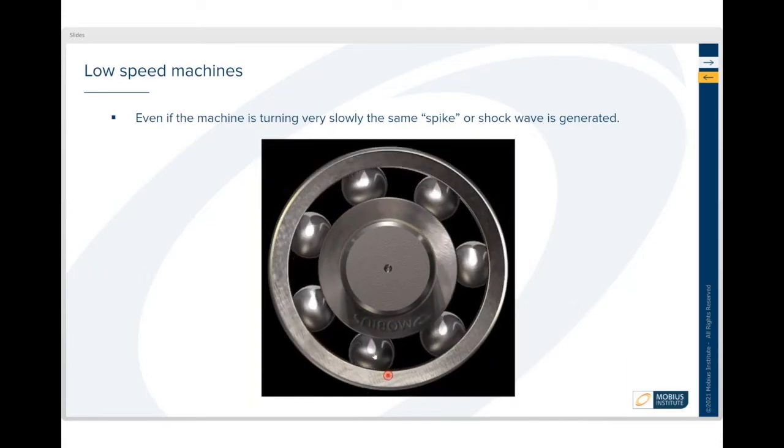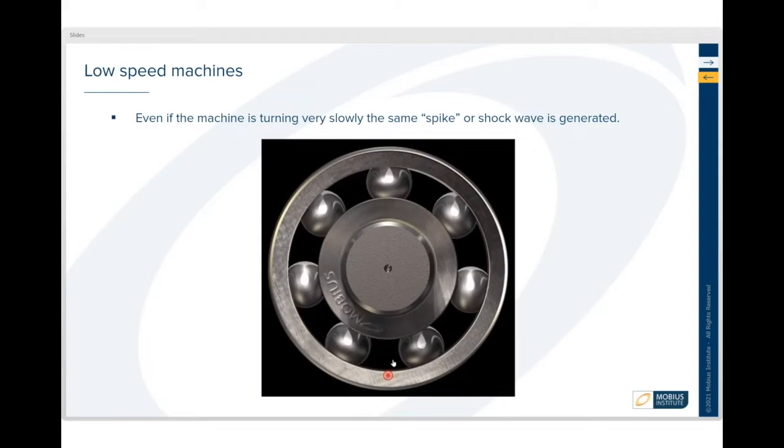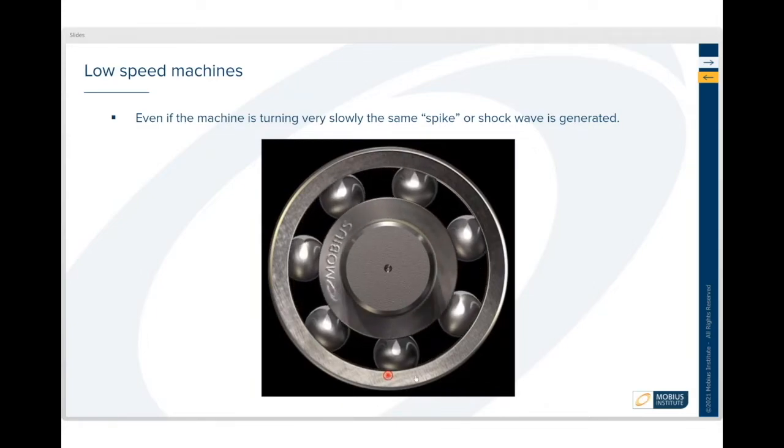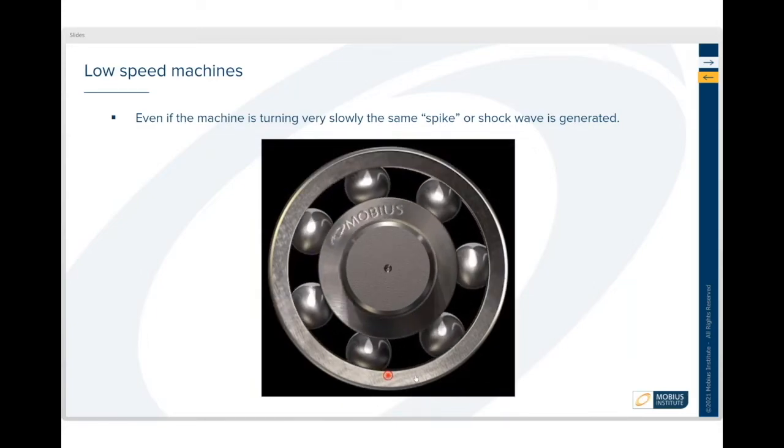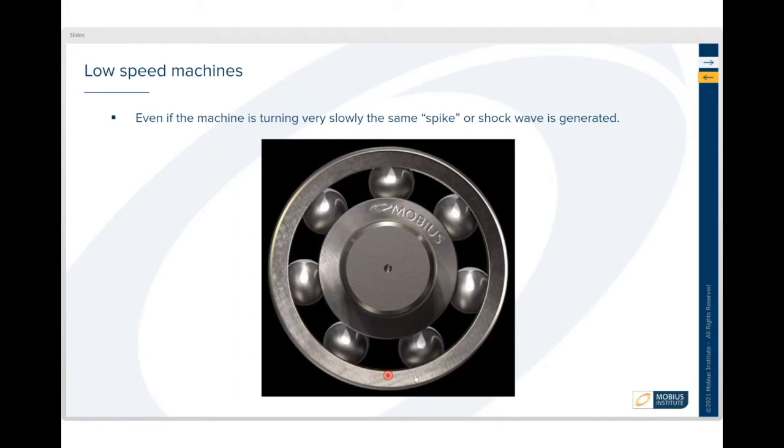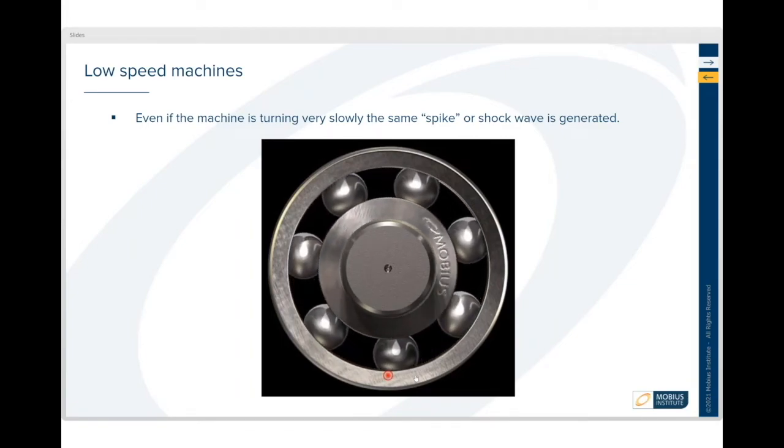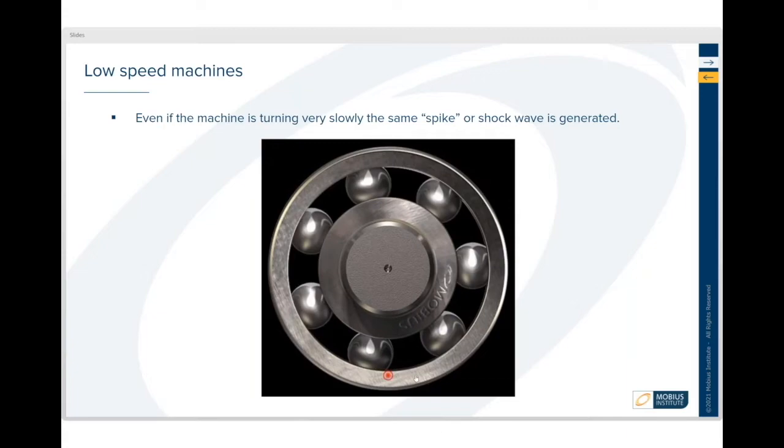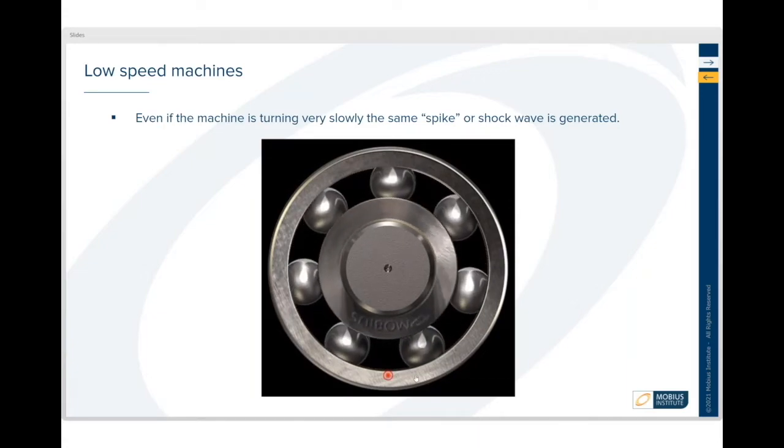The fact is that every time the rolling element rolls over the damaged area on the rolling element, on the inner race or on the outer race, there will be that same spike or shock or the ultrasound generated. And if we measure correctly then we can detect that at an early stage.